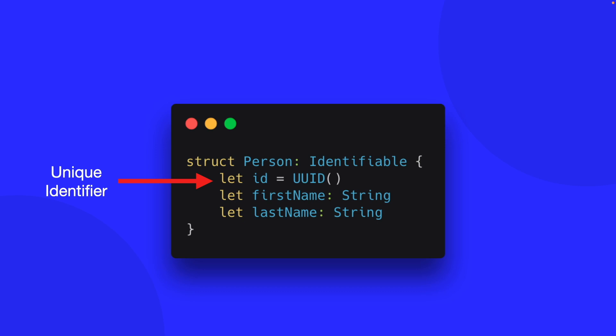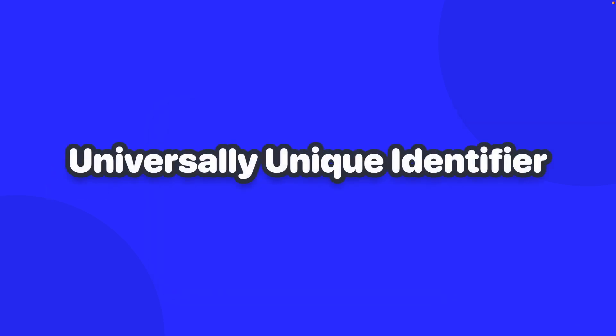There are two things to break down here. First, why a constant, and what is a UUID? UUID stands for Universally Unique Identifier. It's more reliable than using a name because a UUID has an endless number of possible values, making it almost impossible for two objects to share the same identifier. Once you create an instance of a UUID, you automatically get an object with a unique identifier you can use throughout your app.